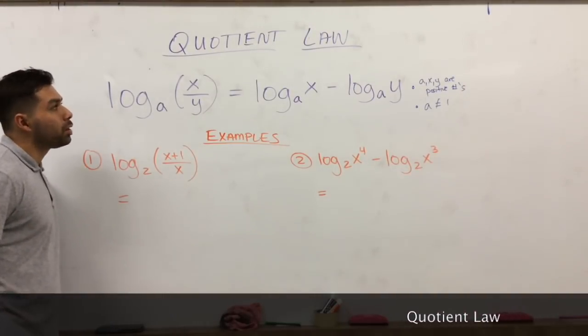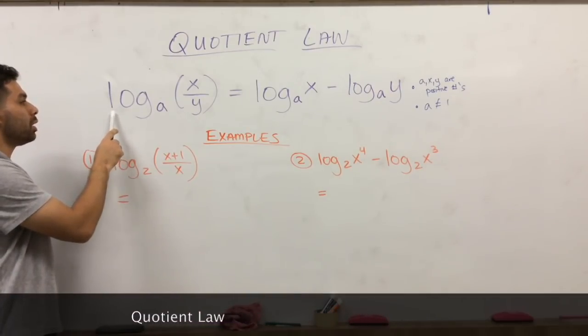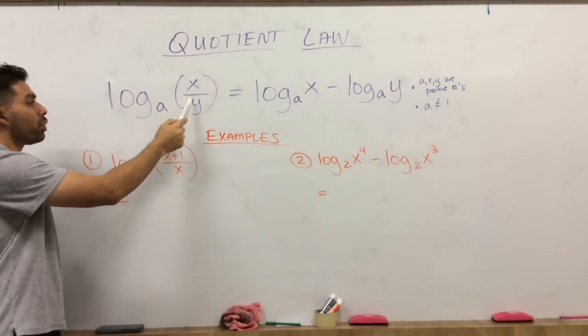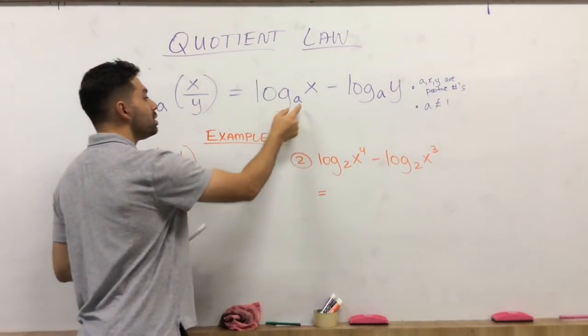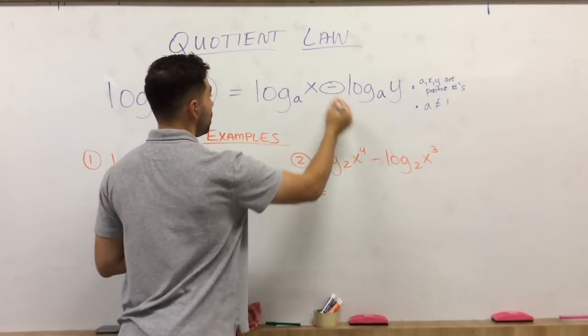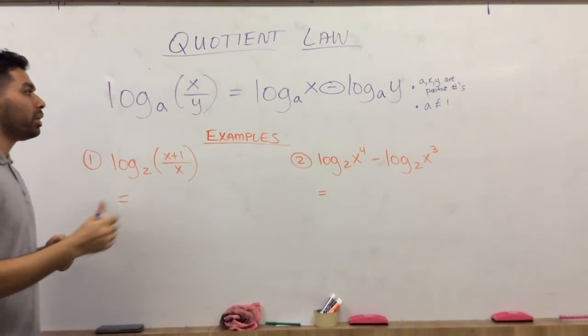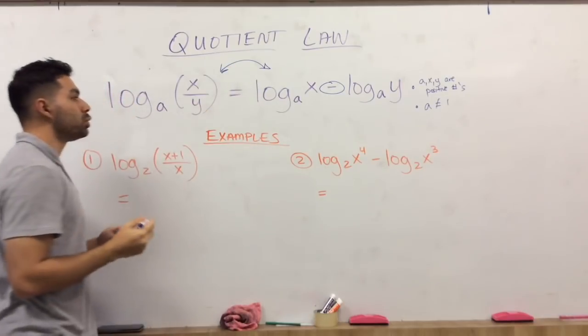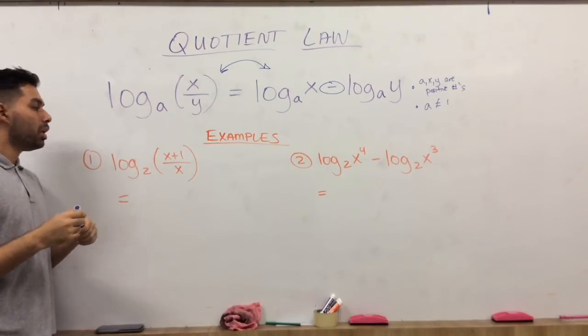All right, so the third law we have is called the quotient law. Now, the quotient law says log of base A, X over Y, X divided by Y, that can be split up into log of base A, X, minus log of base A, Y. Now, same thing applies. You should be able to go back and forth between the condensed form and the expanded form.